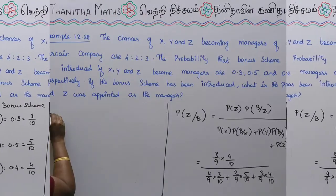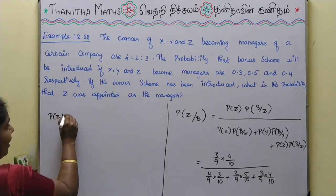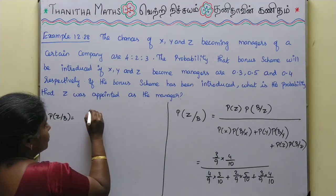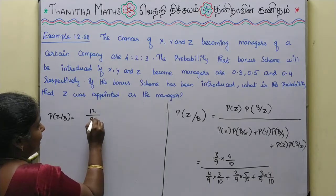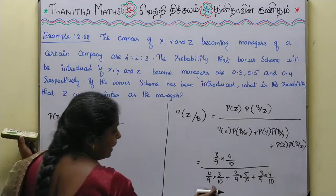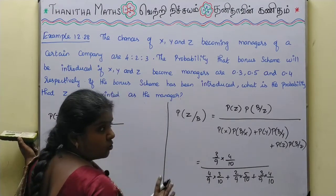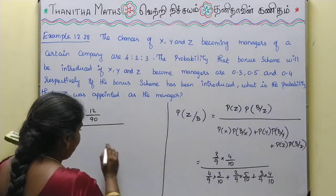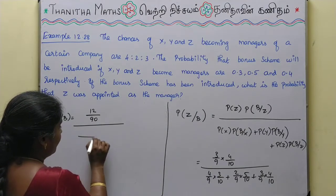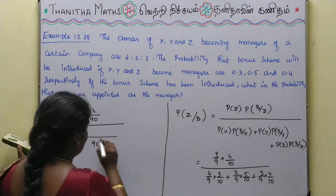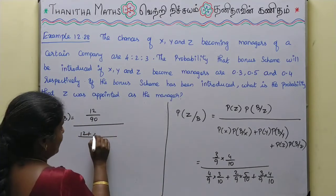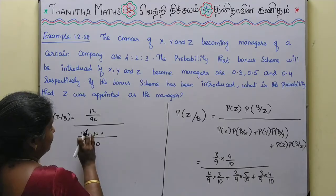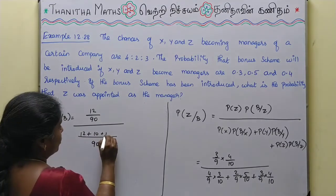Simplifying: the numerator gives 3 times 4 equals 12, over 90. The denominator terms — since all are over 90, we can cancel the 90. The denominator becomes 4 times 3 equals 12, plus 2 times 5 equals 10, plus 3 times 4 equals 12.